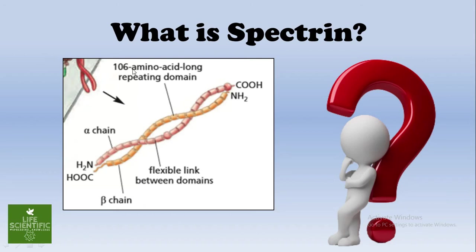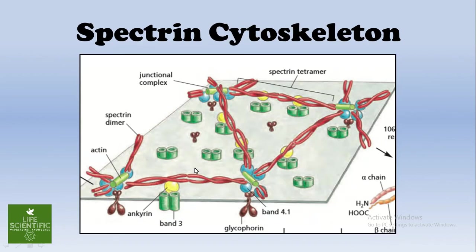Spectrin is a long, thin, flexible rod-like protein consisting of two antiparallel alpha and beta chains. These alpha and beta chains are 106 amino acids long, as you can see in the figure. They also contain flexible links between the domains.